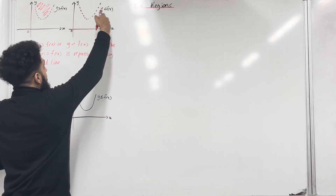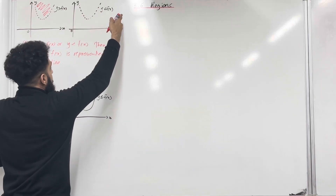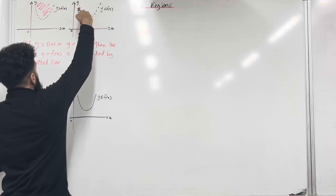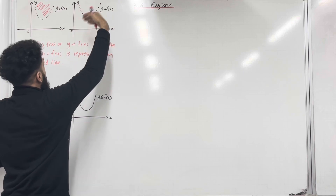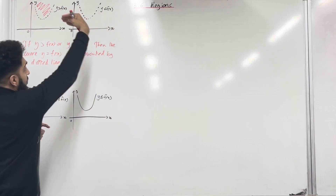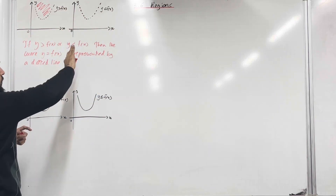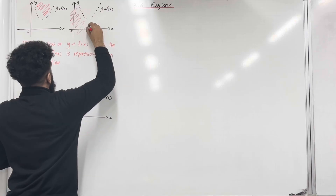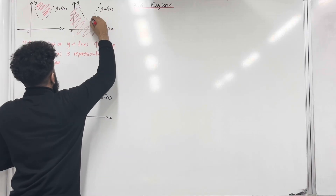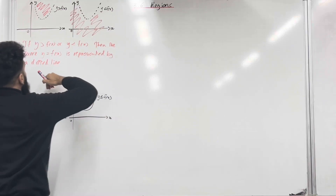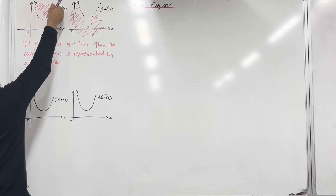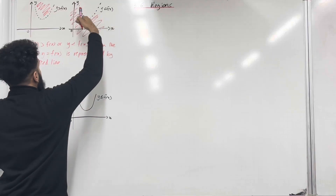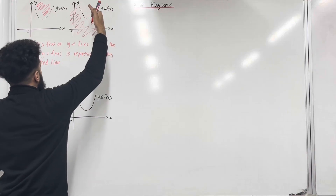y is less than f of x, so equal is not included. The curve is represented by a dotted line. We want to shade in everything that's below the curve, so that will be all of this part over here. Here's the region for y is greater than f of x, and here's the region for y is less than f of x.